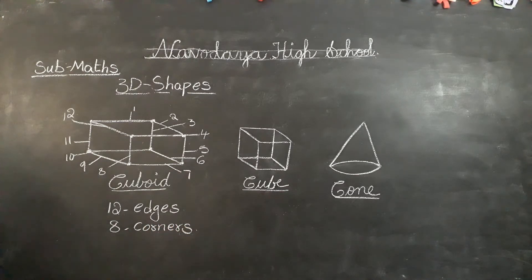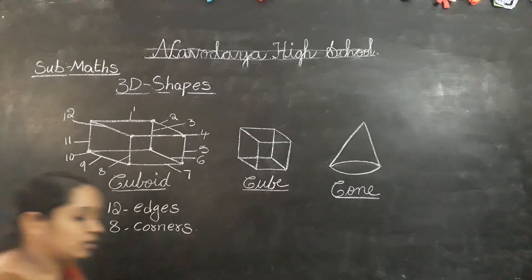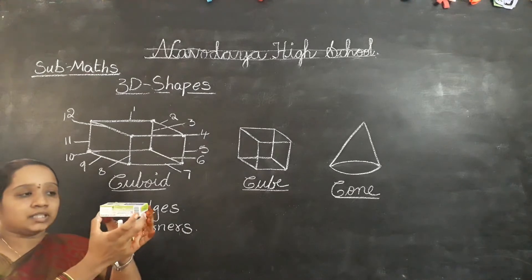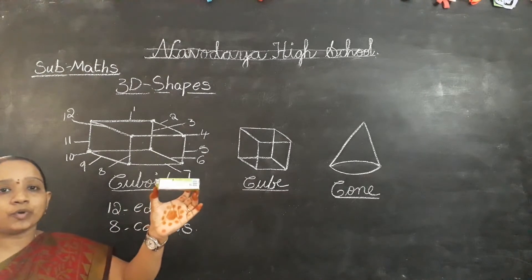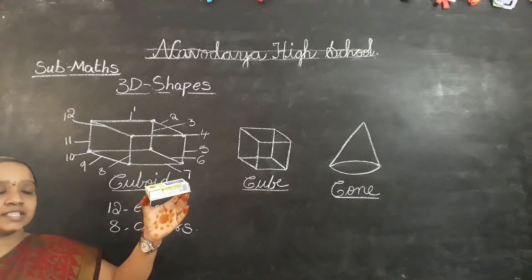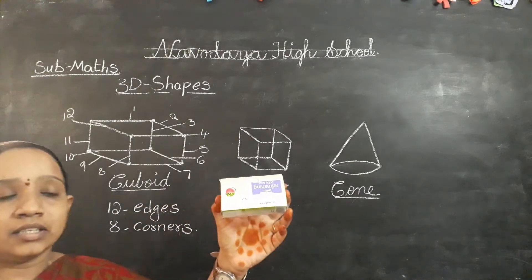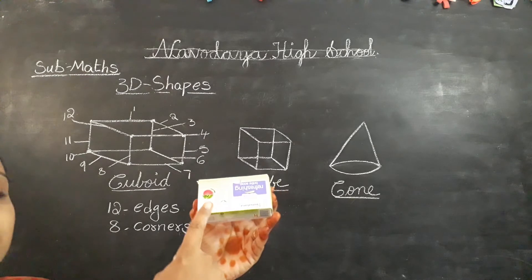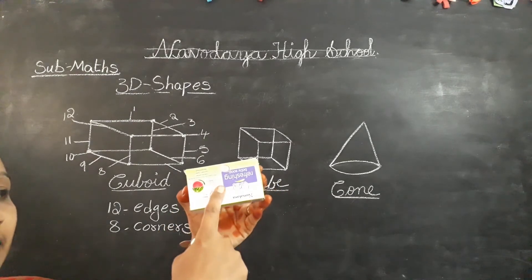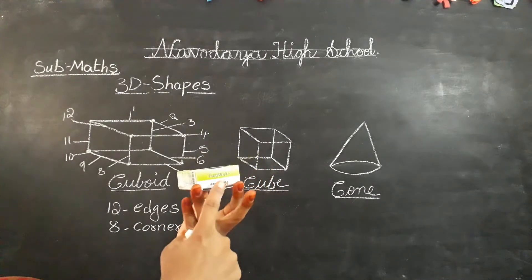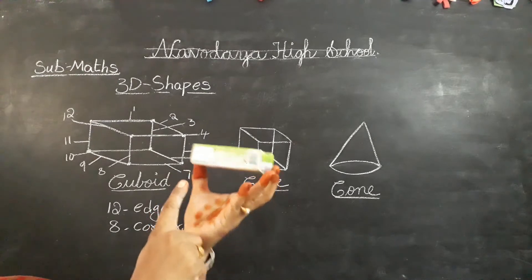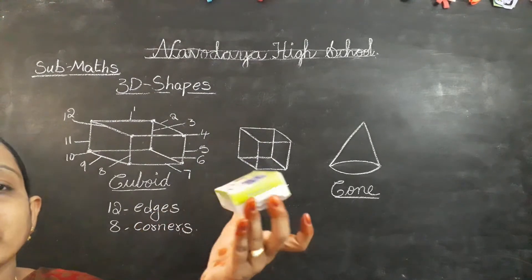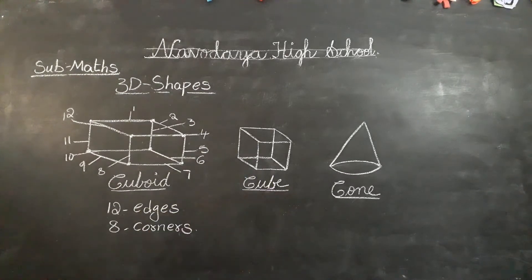Now how many faces are here? Look at this — this is a soap box. It looks like a cuboid. These flat surfaces are called faces. Count: 1, 2, 3, 4, 5, and 6. How many faces in a cuboid? 6 faces.